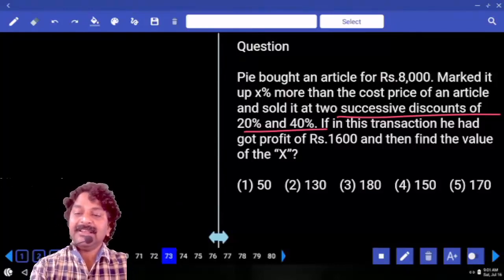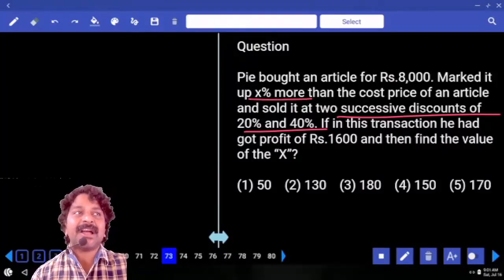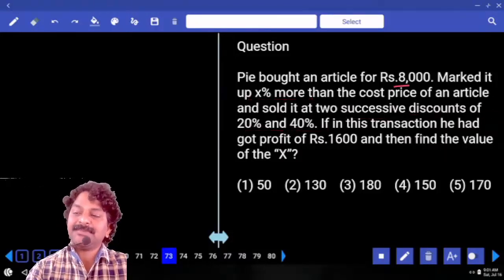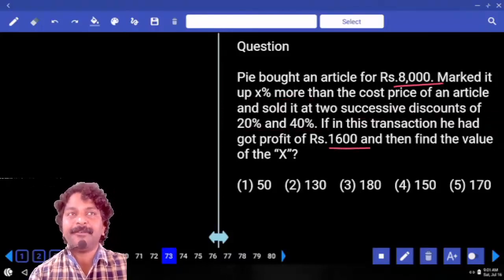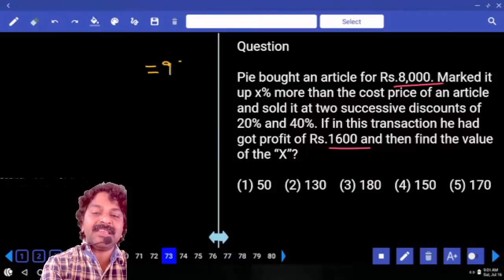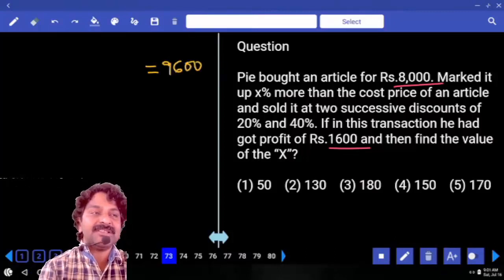X is the percentage upon cost price. Cost price is 8000 and there is a profit of 1600, then selling price is equal to 9600.